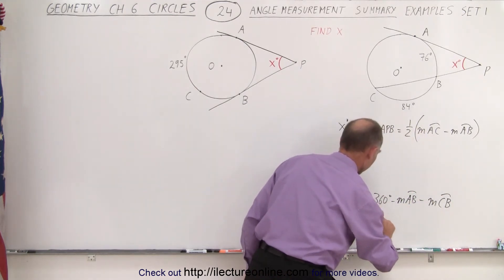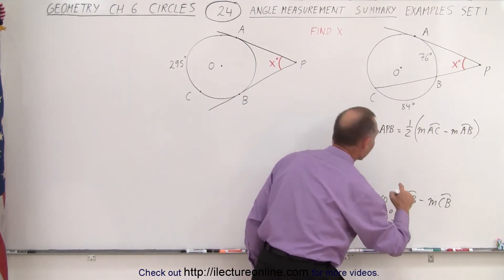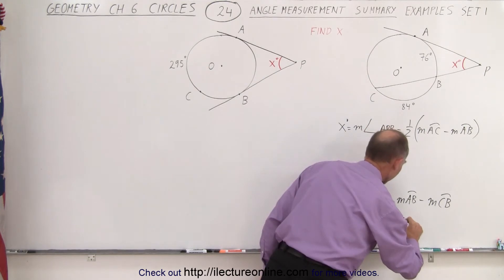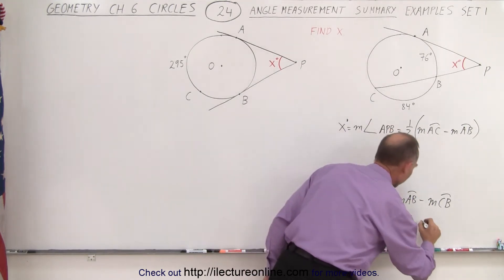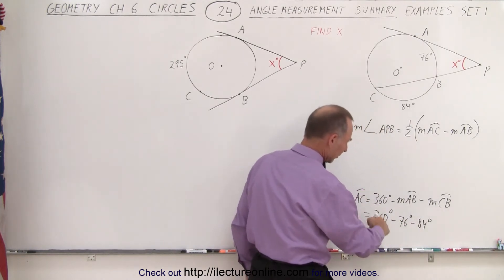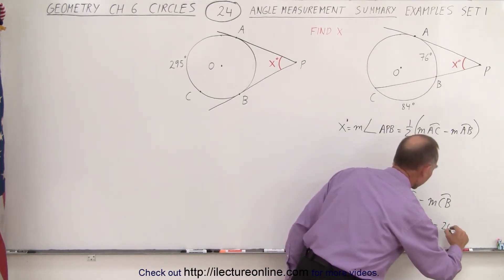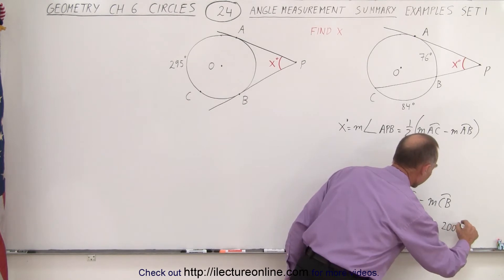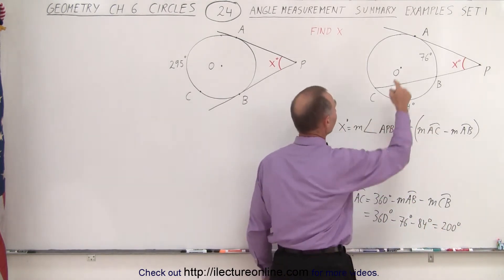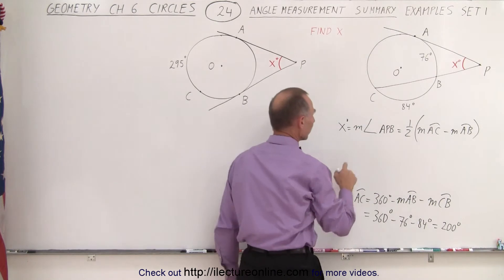That is equal to 360 degrees, minus the measure from A to B which is 76 degrees, minus the measure from C to B which is 84 degrees. Together that's 160 degrees; subtract from 360, gives us 200 degrees. So now we know the measure from A to C along the arc length.